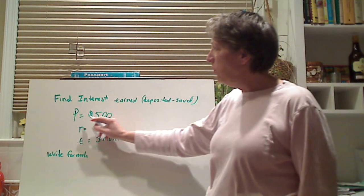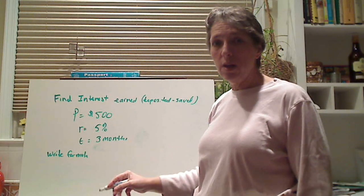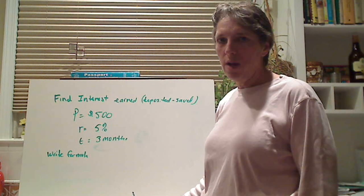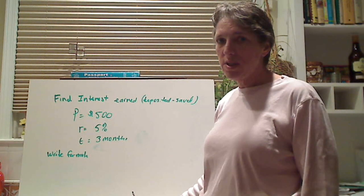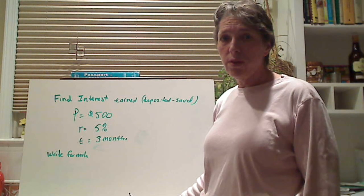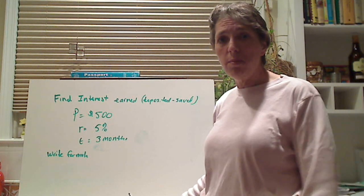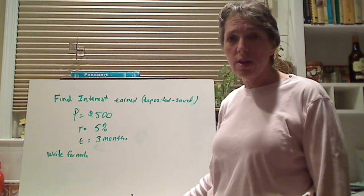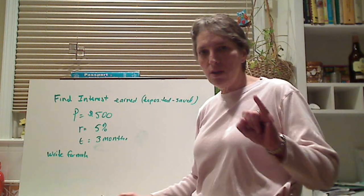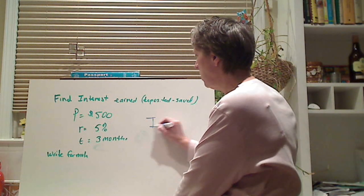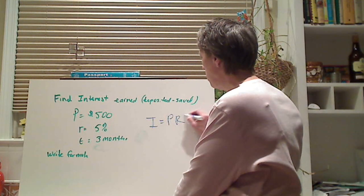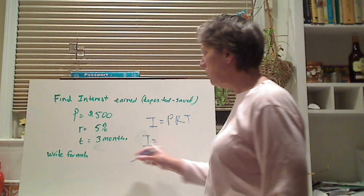So we have the principal. This is usually how you'll see it or you organize it. The principal is $500. The rate is 5% and you're putting it in there for three months. That means you can't touch it for three months and they're going to give you 5% interest every month. The first thing you have to do is you have to write the formula. I equals PRT. The second thing is you write I equals.